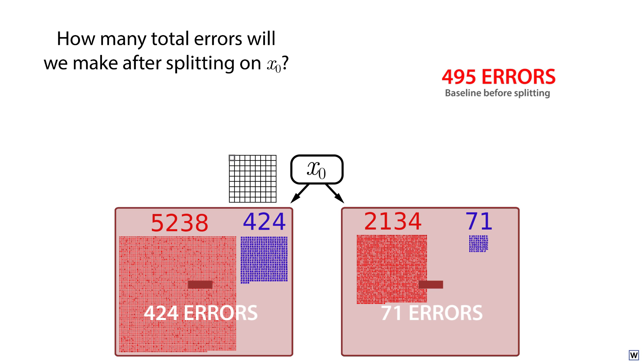Now the big question. Did our total number of errors go up, go down, or remain equal to our baseline of 495?